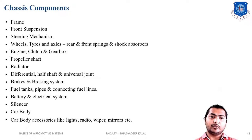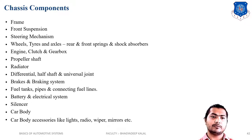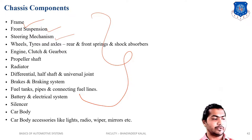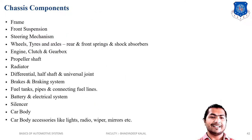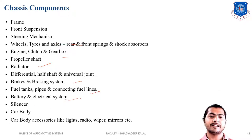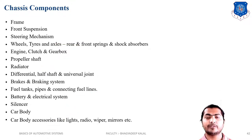Which components are included in the chassis? First is the frame. Front suspension and rear suspension. Steering mechanism is also part of chassis. The wheel, tyre and axles, engine, clutch, gearbox, propeller shaft, radiator, differential, half shaft, universal joint, braking system, fuel tank, pipes, connecting fuel lines, battery, electric system, silencers, and car body — all these components are mounted on the chassis.